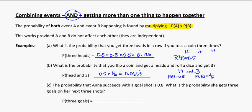The probability that Anna succeeds with a goal shot is 0.8. What is the probability she gets three goals on her next three shots? Again, that's the probability that she scores times the probability that she scores times the probability that she scores. So 0.8 times 0.8 times 0.8. If we put that into the calculator, we get 0.512. She has a 0.512 chance of scoring her next three goal shots in a row.